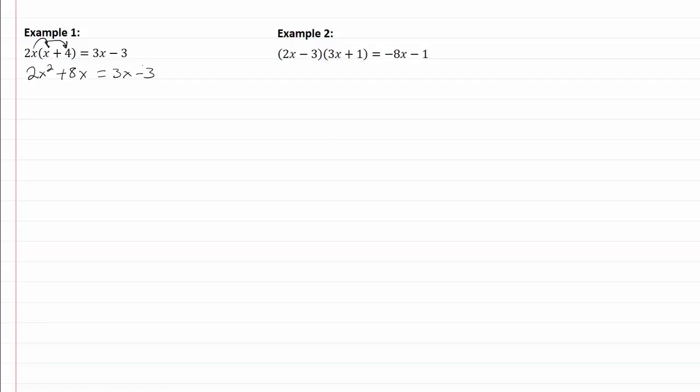Now that I no longer have parentheses, I need to get everything on one side, so I'm going to subtract the 3x and add the 3. So that leaves me with 2x squared plus 5x plus 3 equal to zero.